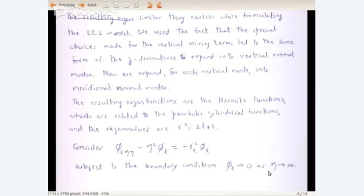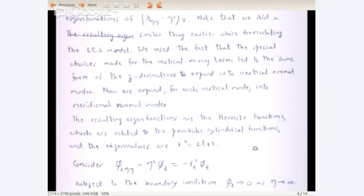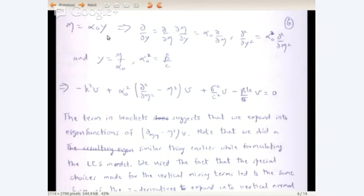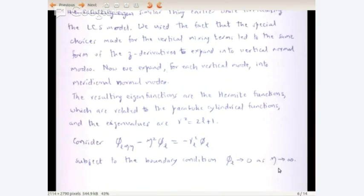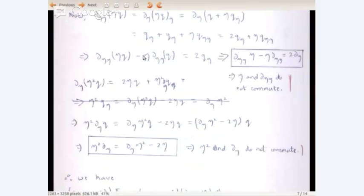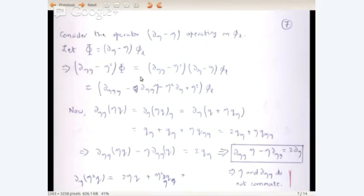The eigenfunction equation is φ_L ηη minus η² φ_L equals minus γ_L² φ_L, subject to the boundary condition that φ_L goes to zero as η goes to plus or minus infinity — that is, as y goes to plus or minus infinity.